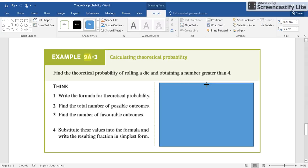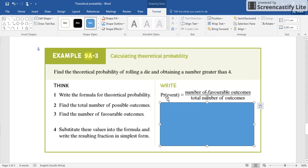So first of all, write your formula down. Your P(event) is equal to the number of favorable outcomes. So how many favorable outcomes?